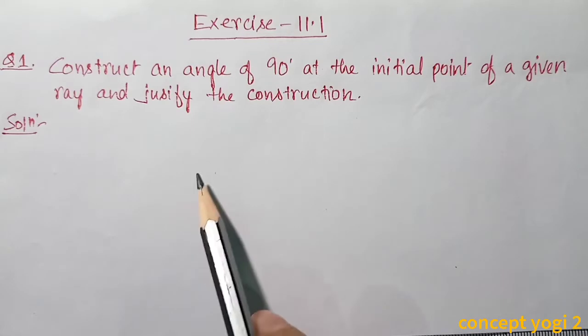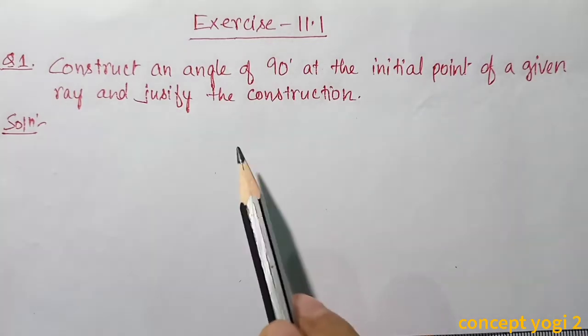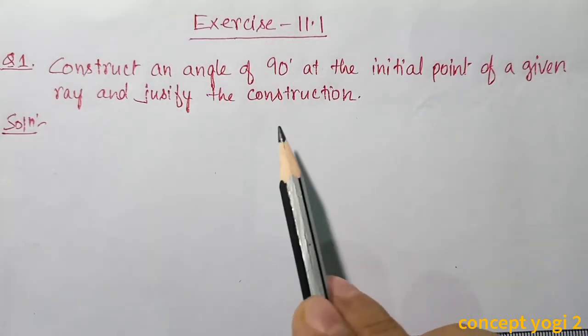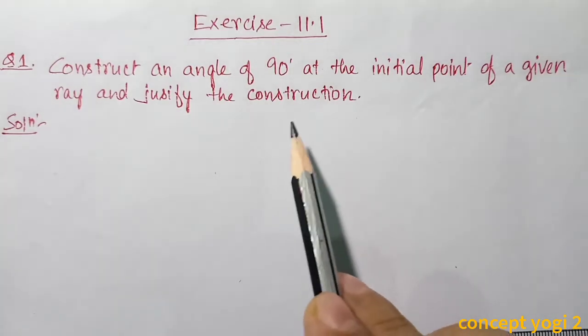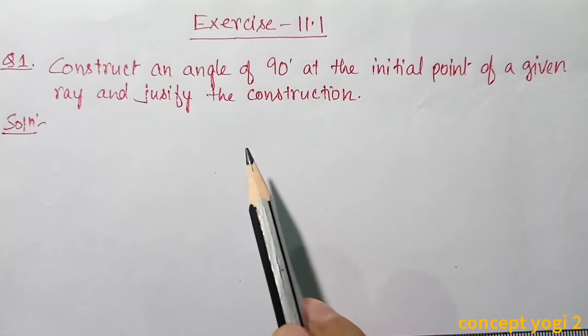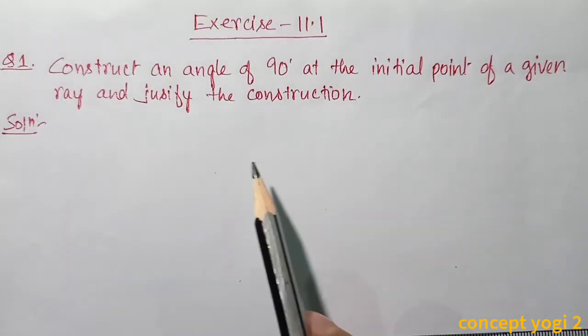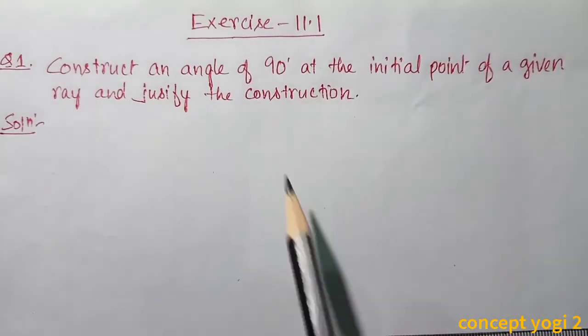In my last video we have already discussed how to draw a 60 degree angle, 120 degree angle, and angle bisector. By using the same steps we will construct a 90 degree angle.